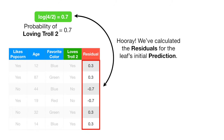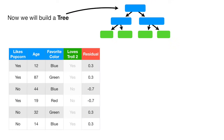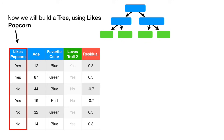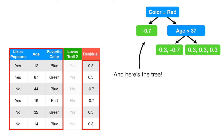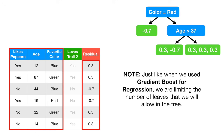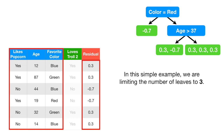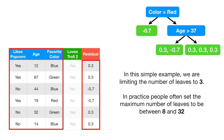Hooray! We've calculated the residuals for the leaf's initial prediction. Now we build a tree, using likes popcorn, age, and favorite color, to predict the residuals. Note: just like when we used gradient boost for regression, we are limiting the number of leaves that we will allow in the tree. In this simple example, we are limiting the number of leaves to 3. In practice, people often set the maximum number of leaves to be between 8 and 32.